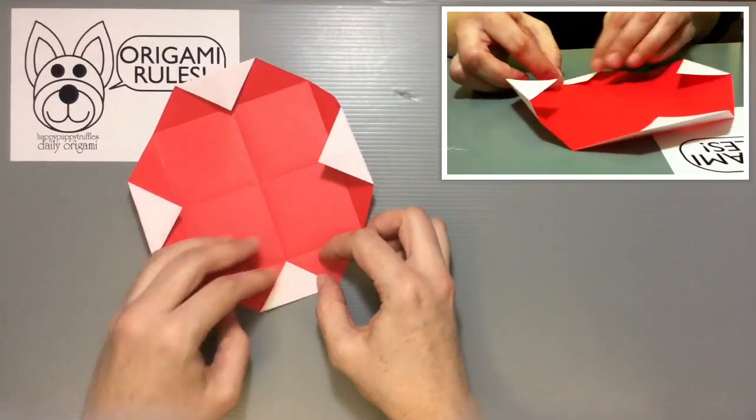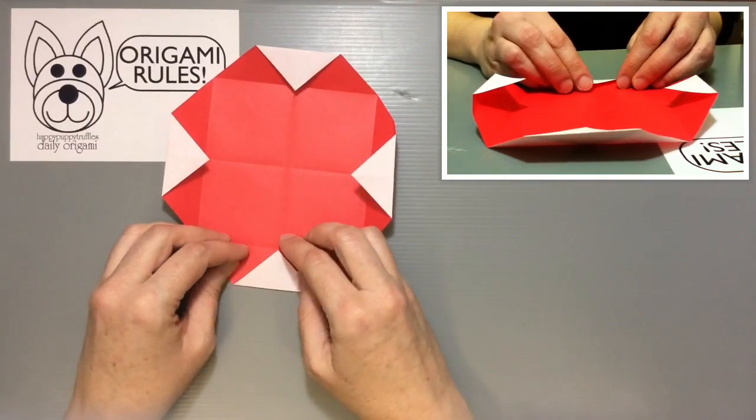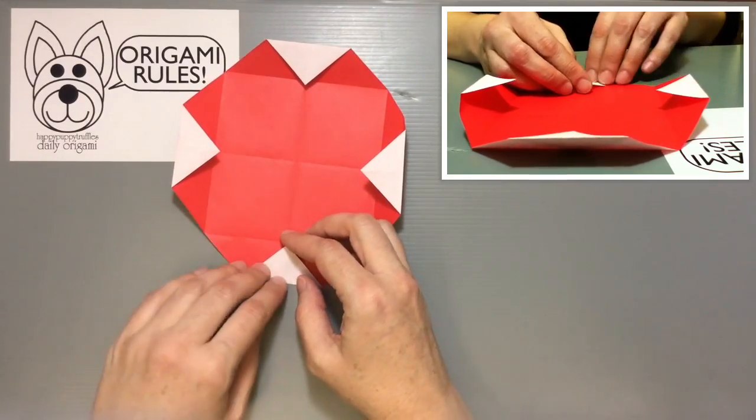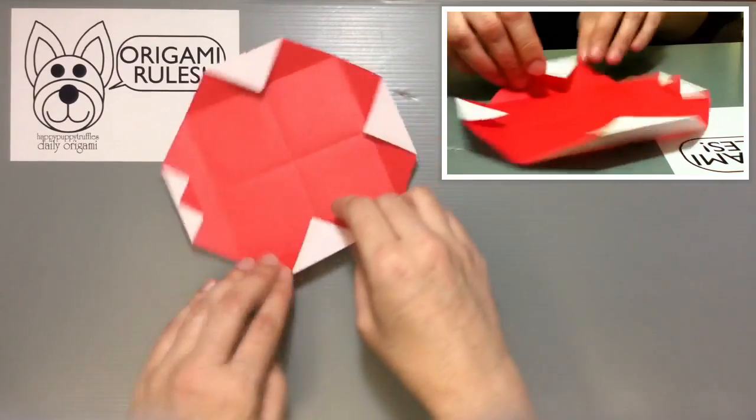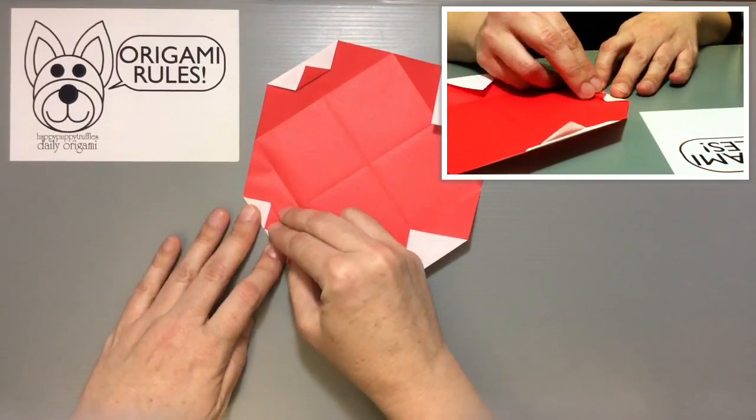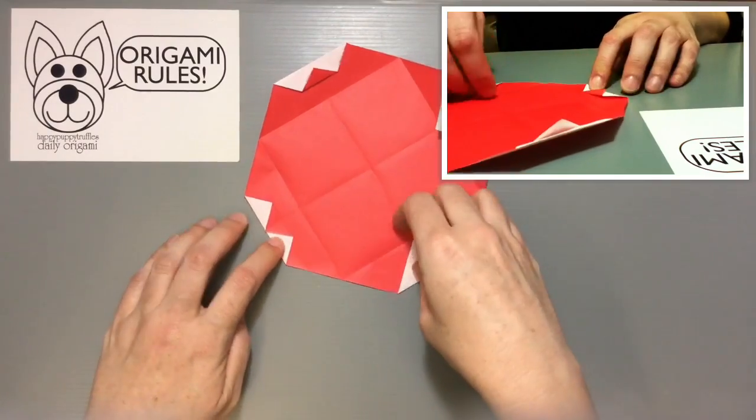Once you've completed that for all four, then we're going to take the tip and fold back out to the edge we just created by folding. So you reveal a nice little tiny bit of red here in this case.